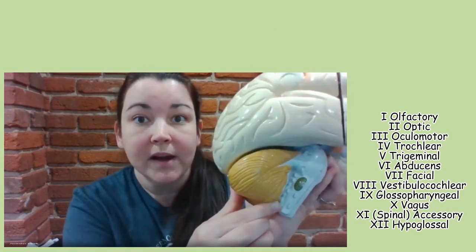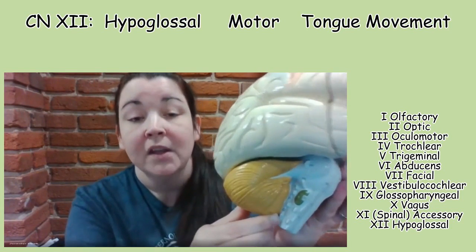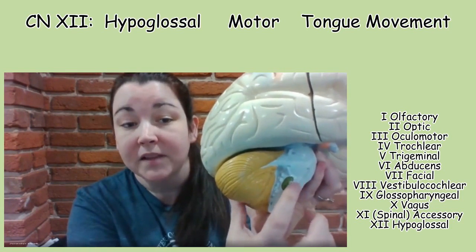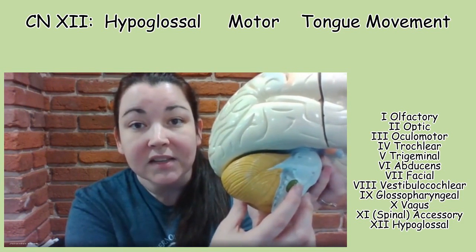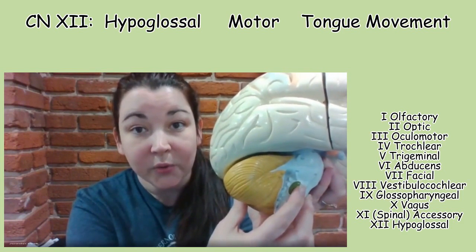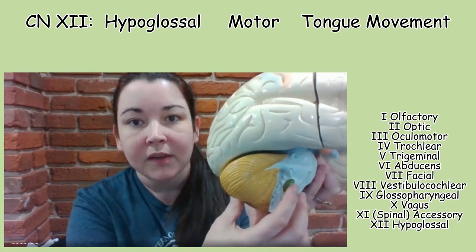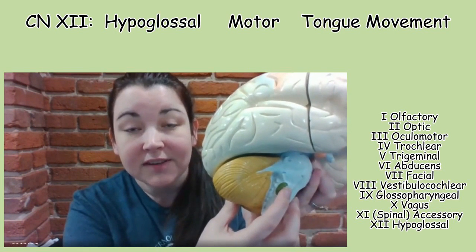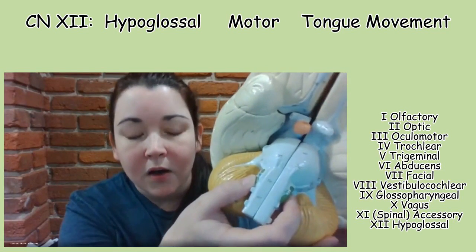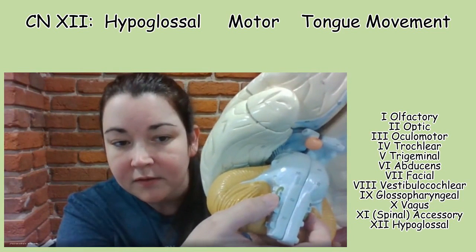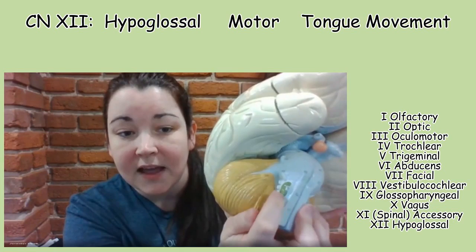You might wonder: what happened to hypoglossal? You have to hop back up to the olive. From the brainstem humps, we hop back up to the olive and there we have hypoglossal, cranial nerve twelve. 'Hypo' means below or beneath, and 'glosso' means tongue — so hypoglossal is below the tongue. It has motor function and allows for tongue movement. On the brain model, hypoglossal is identified at number 124, right at the olive.